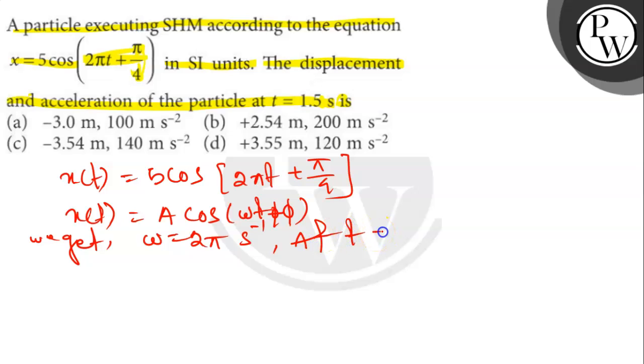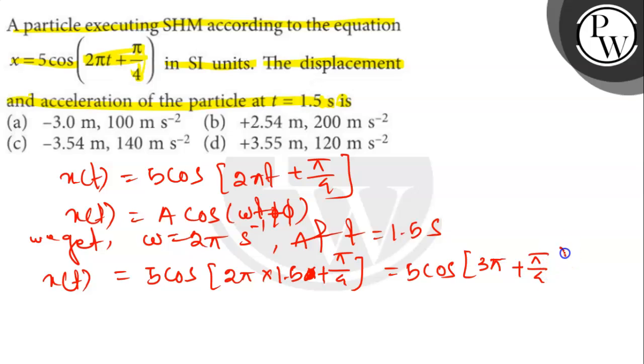At t equals to 1.5 second, displacement x(t) equals to 5 cos 2 pi into 1.5 plus pi by 4 which is 5 cos 3 pi. So, here what we got minus 5 into 0.707 meter which is minus 3.54 meter.